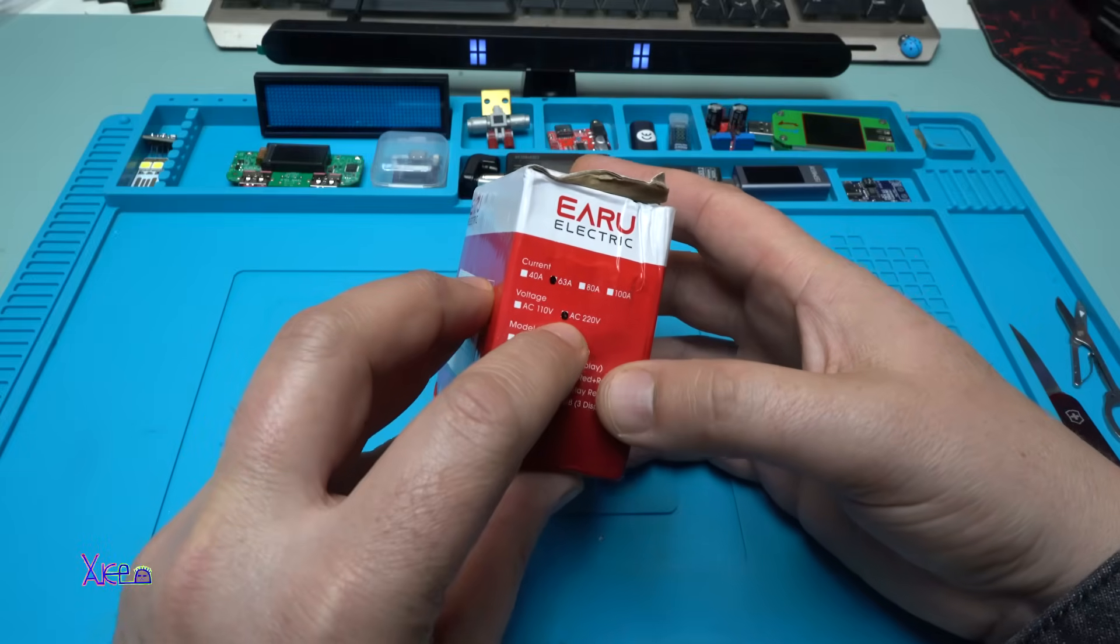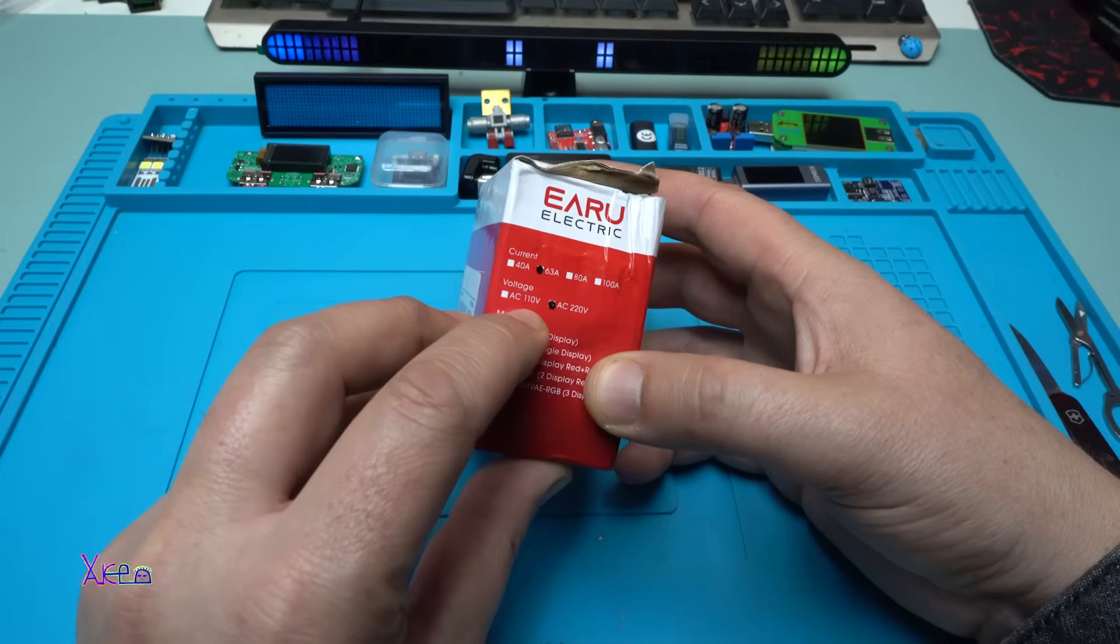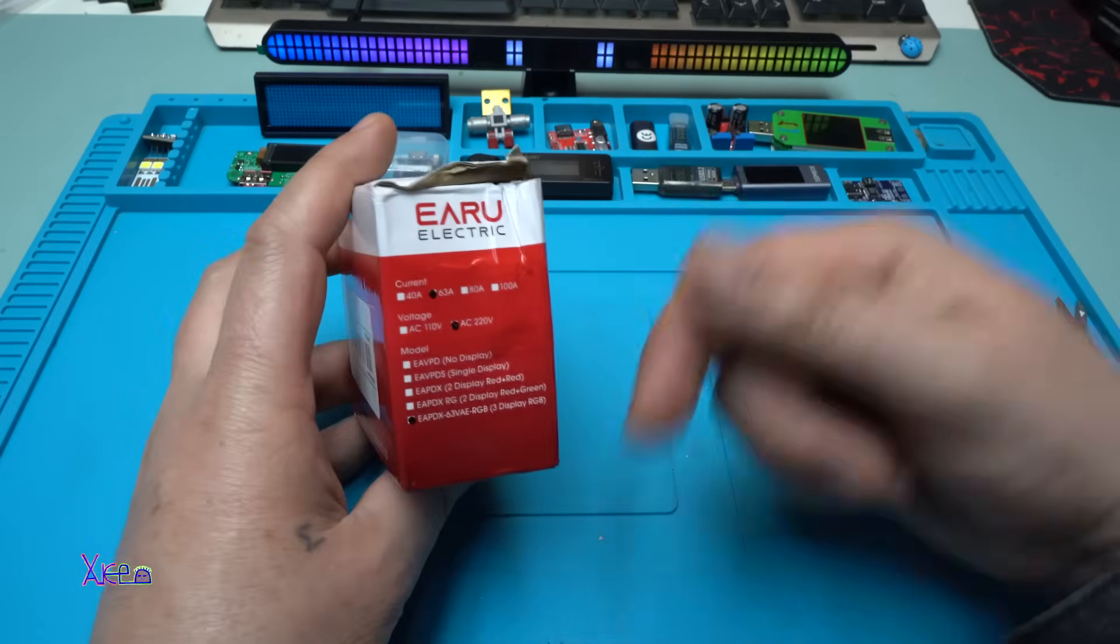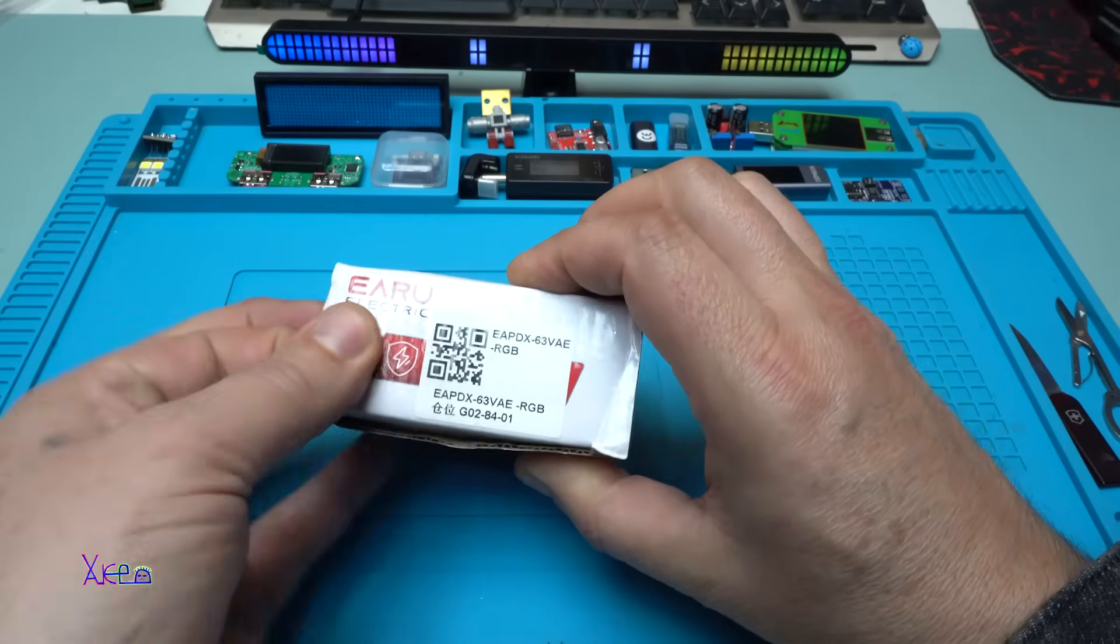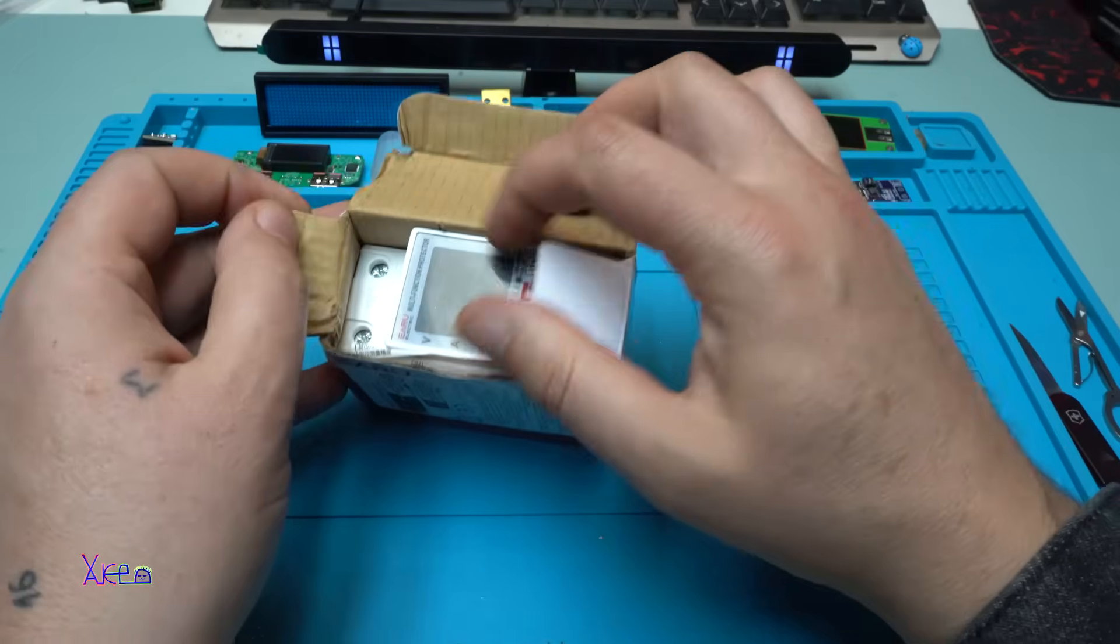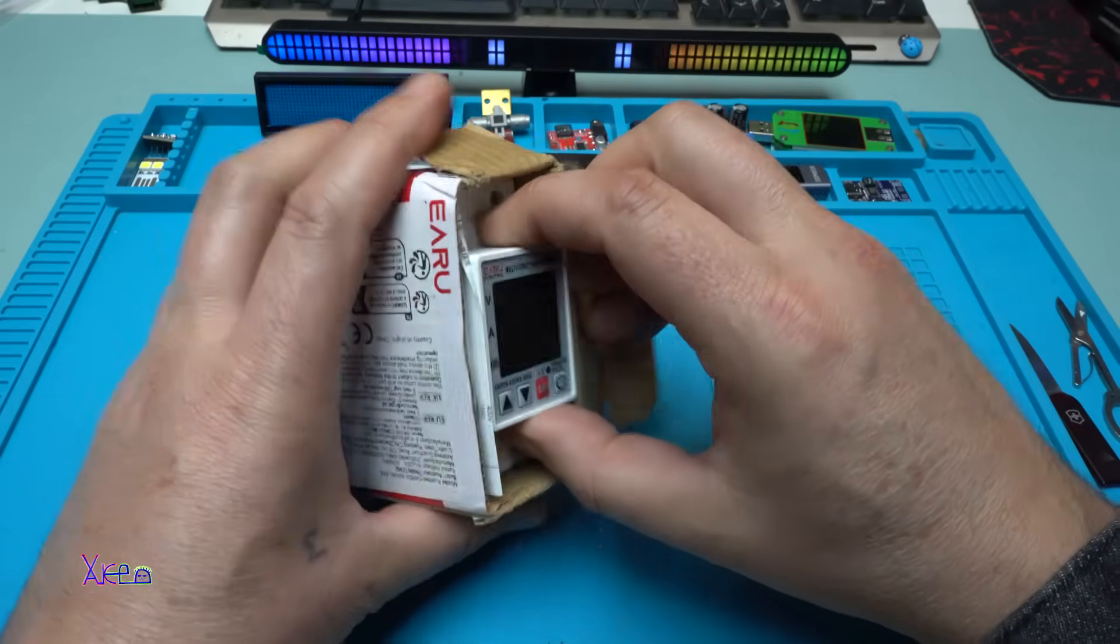63 amperes, 220 volts, also you can choose AC 110, both links will be in description below so you can check it. RGB, all right, DIN rail module.